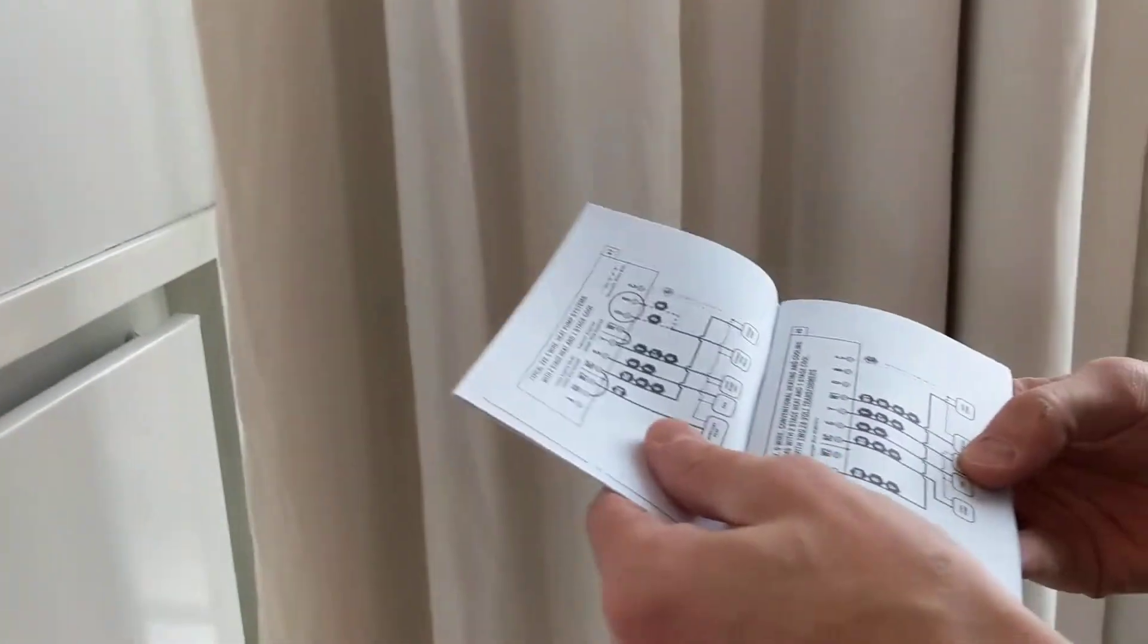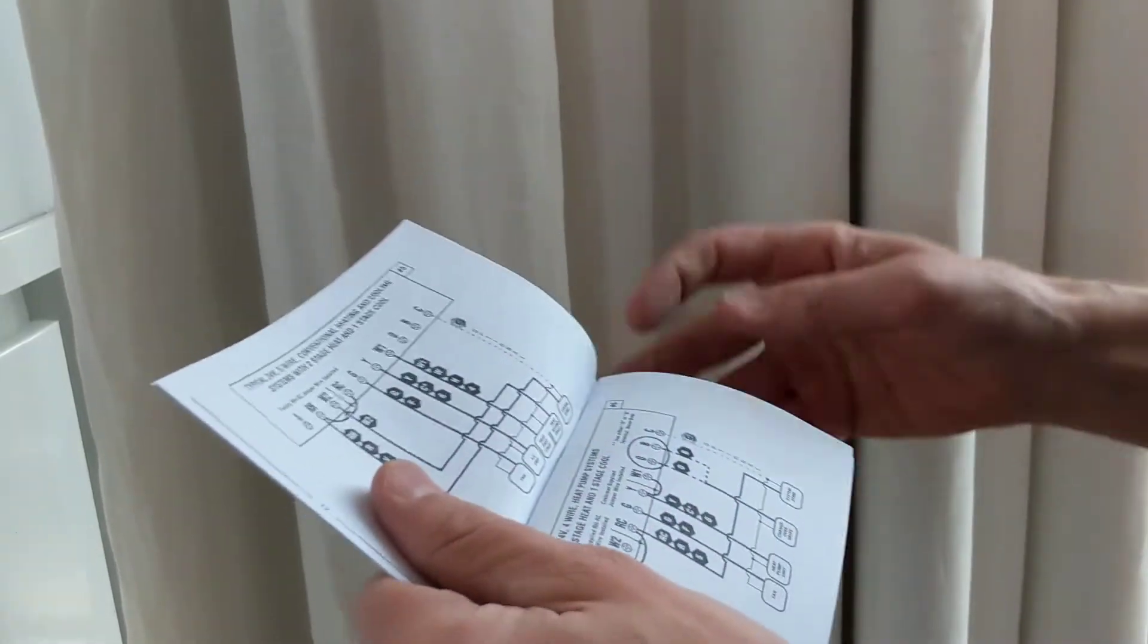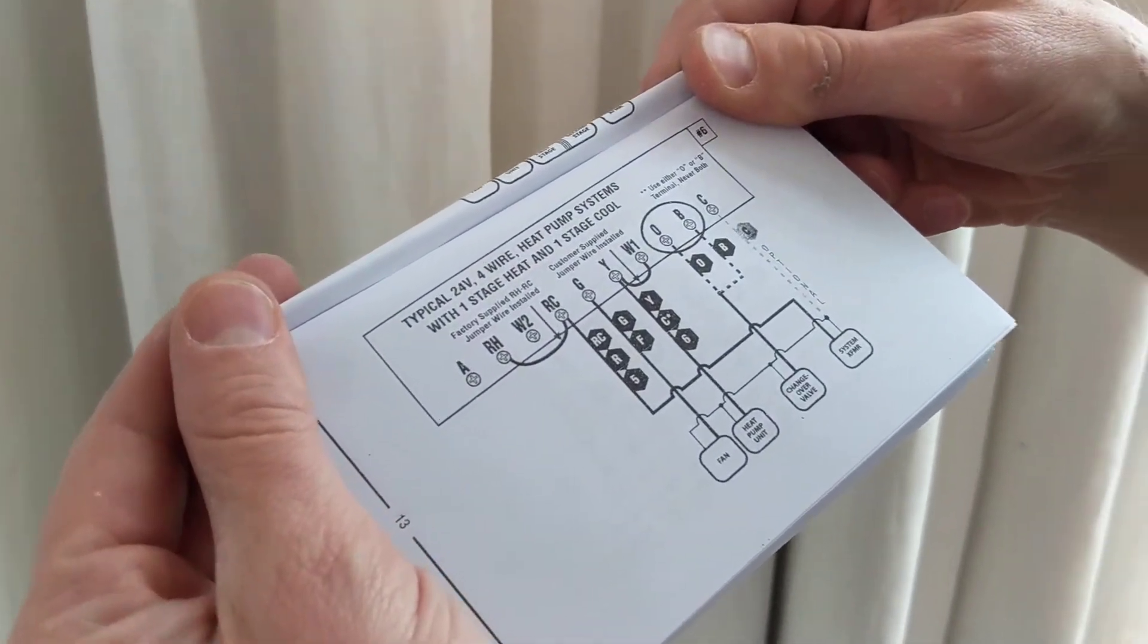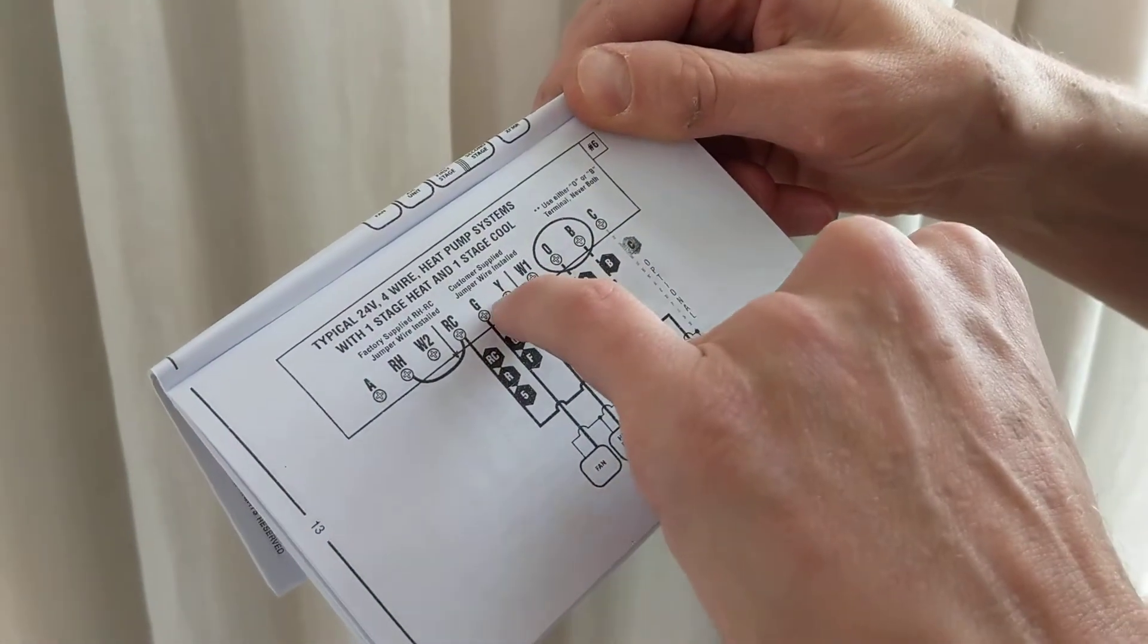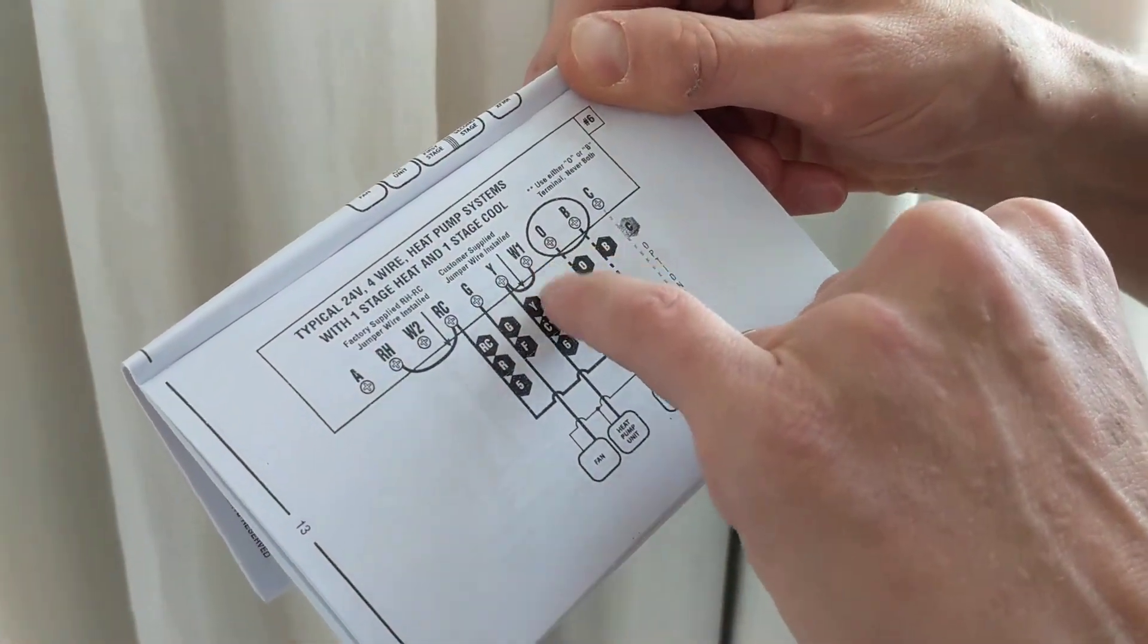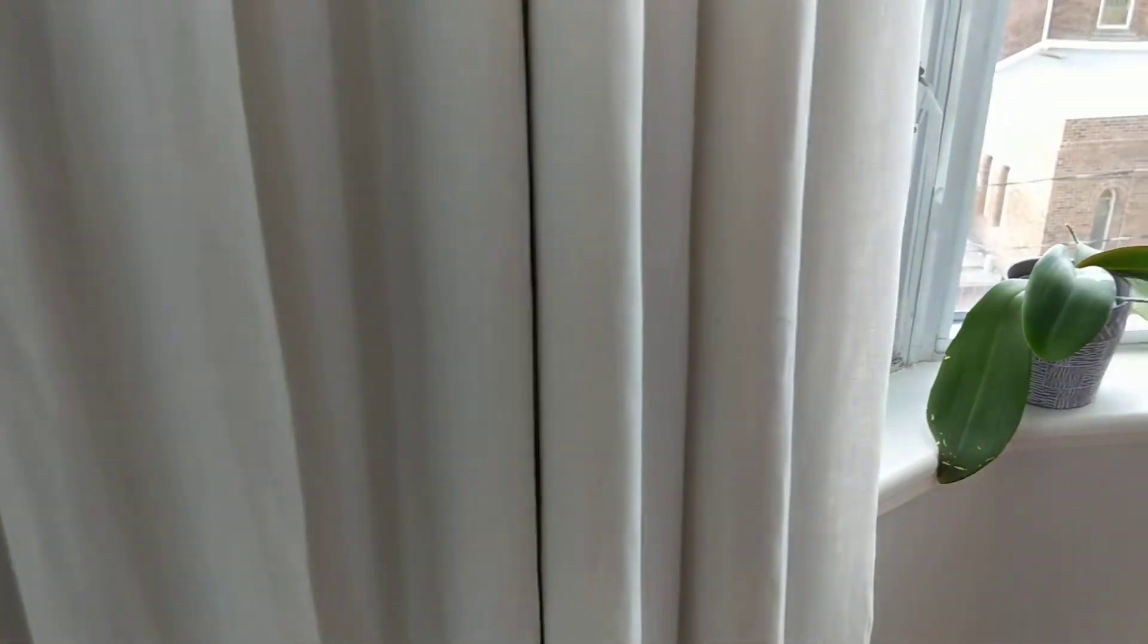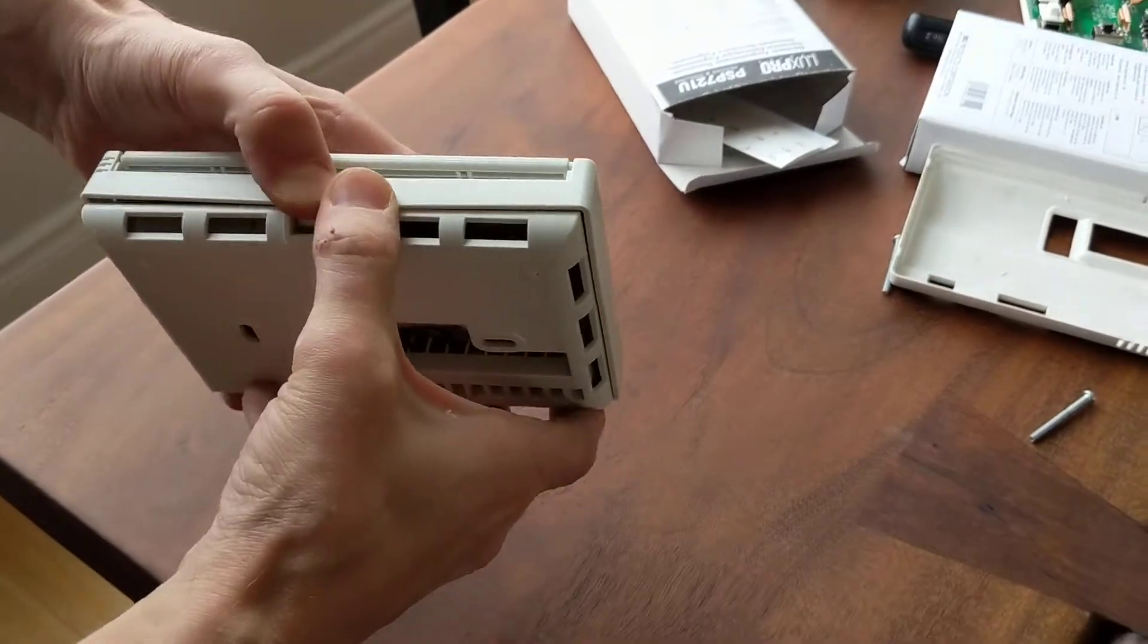Inside there is a manual and we want guide number six. It's a four wire heat pump system. One stage heat, one stage cool. And here's where it shows Y going to W1. And then we're going to attach that one. This other one already comes built in. So we've taken it out of the box. Open it up. Same sort of thing.